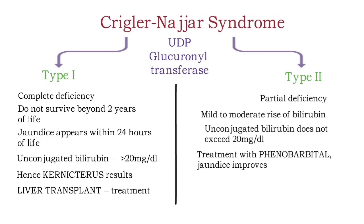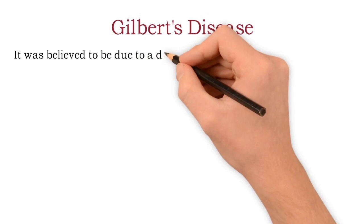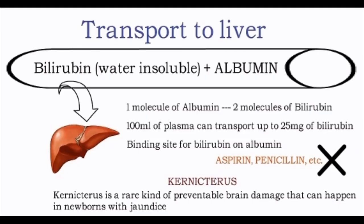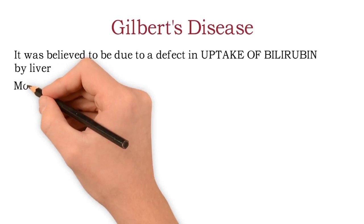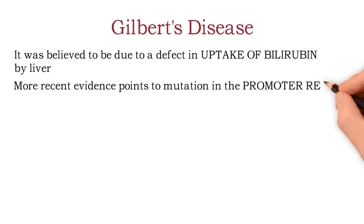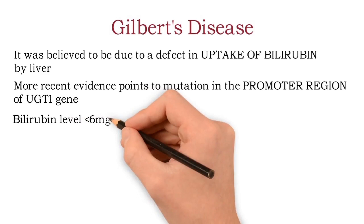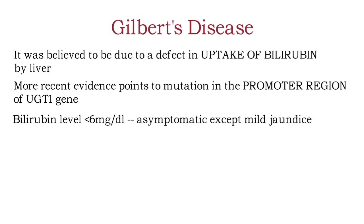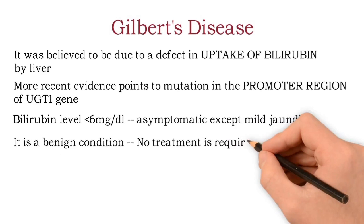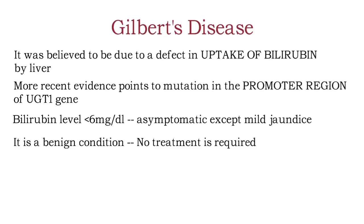Next is Gilbert's disease, which is believed to be due to a defect in the uptake of bilirubin by the liver. Bilirubin level is usually less than 6 mg per deciliter and the patient is asymptomatic except for mild jaundice. It is a benign condition and requires no treatment. In Gilbert's disease, unconjugated or indirect bilirubin is increased.